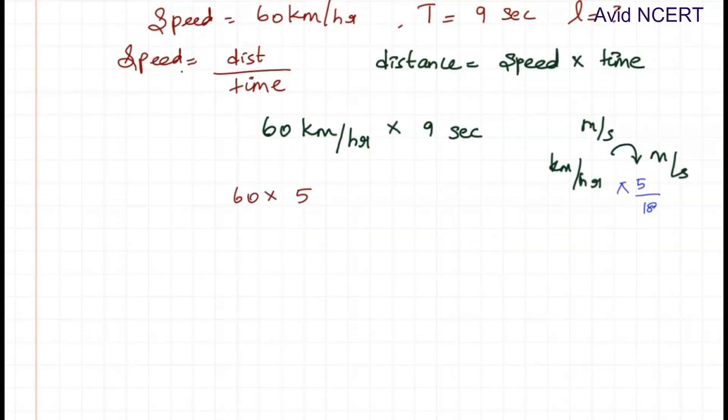So it is 60 times 5 by 18 times 9. Time is 9. So we can simplify this to find the answer, which is 9 times 1 is 9, 9 times 2 is 18, 2 times 30 is 60. So 30 times 5 is 150. So now we have converted this into meters, so it is 150 meters.